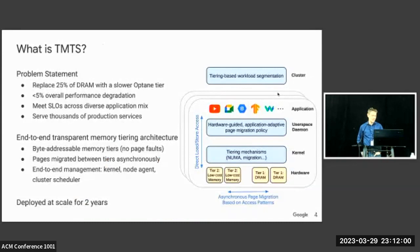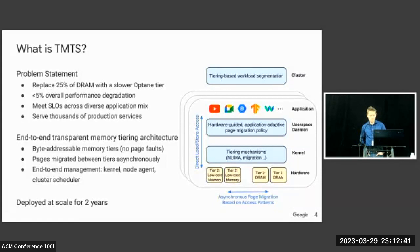TMTS seeks to replace 25% of DRAM with a slower Optane tier. However, the architecture is generic and isn't tied to either the 25% ratio or Optane as a hardware target. We look to hit less than 5% average performance impact and need to meet the SLOs of thousands of different applications and production services. TMTS is an end-to-end transparent memory tiering architecture providing byte-addressable access to the second tier without page faults, doing page migration asynchronously and transparently to applications, with policy implemented at the kernel, user space node agent, and cluster scheduler. We've deployed it at scale for two years.